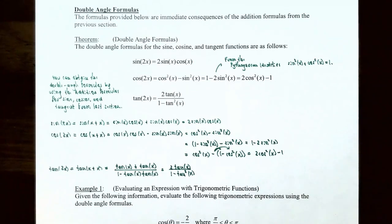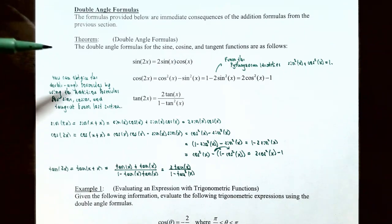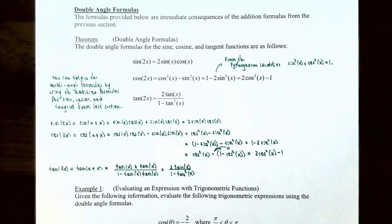So let's talk about the double angle formulas. The formulas provided below are immediate consequences of the addition formulas from the previous section. The double angle formulas for the sine, cosine, and tangent functions are as follows. Sine of 2 times x is equal to 2 times sine of x times cosine of x.